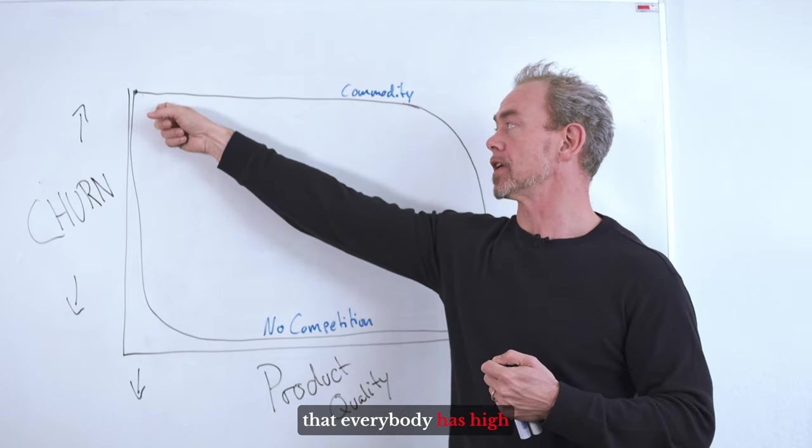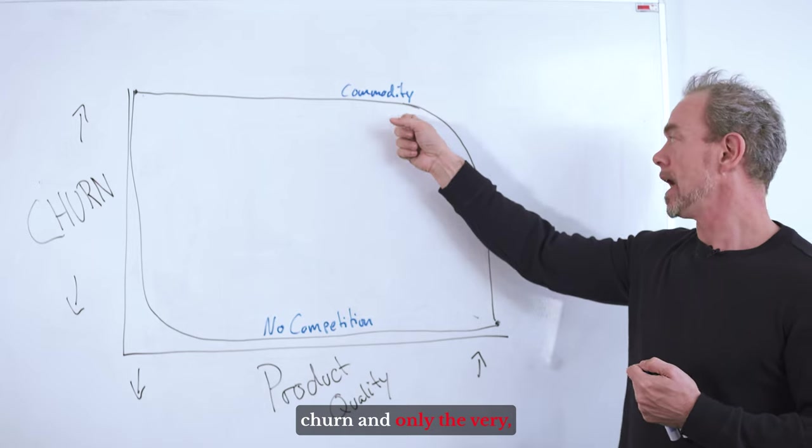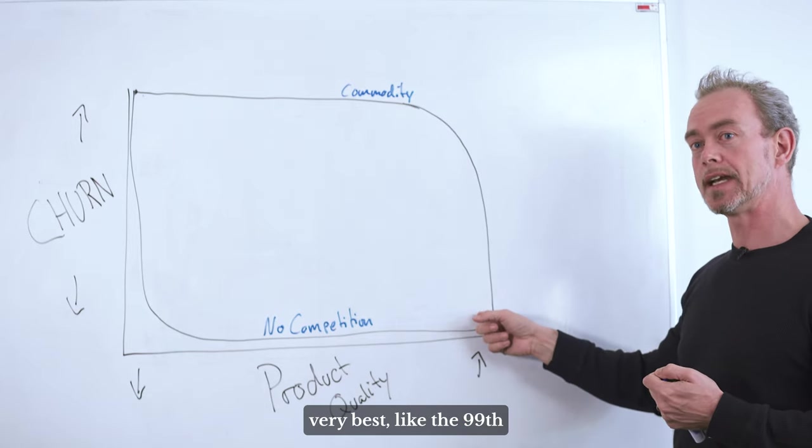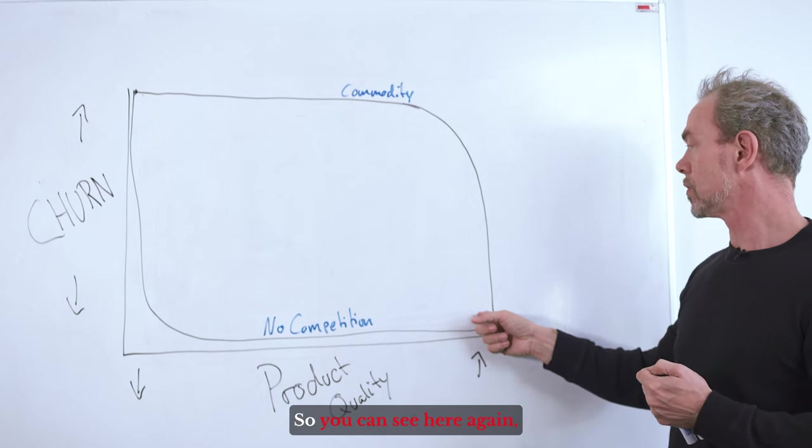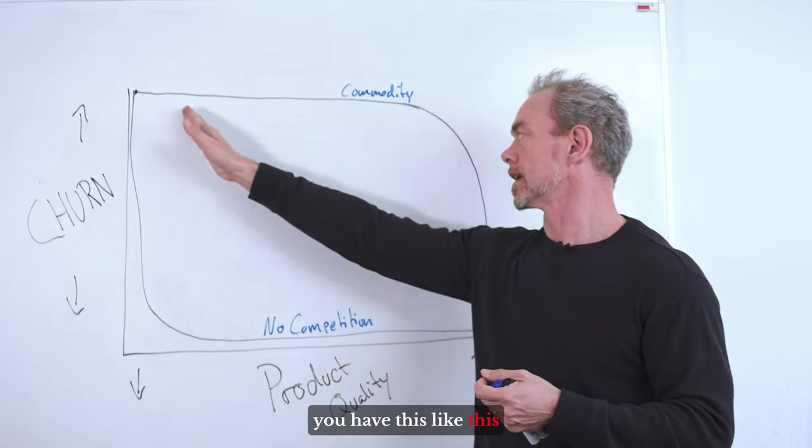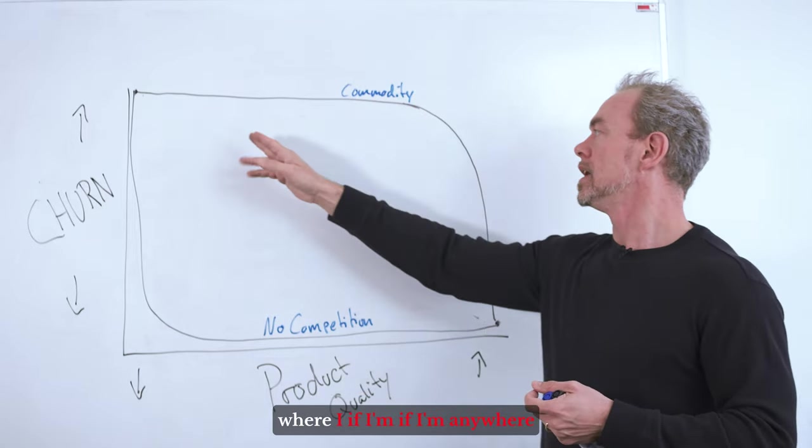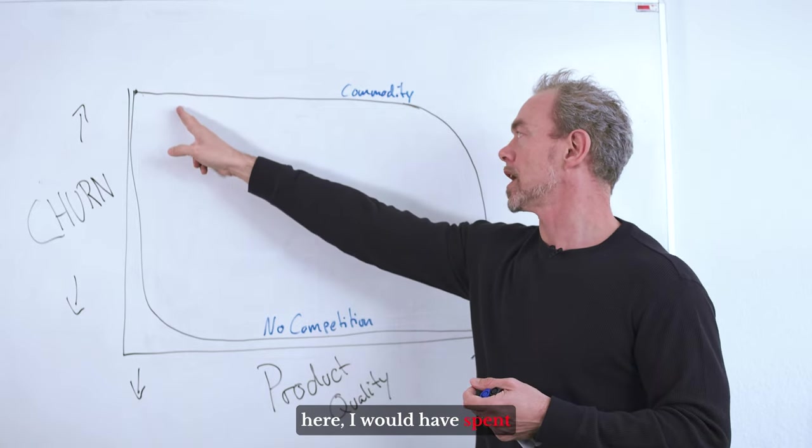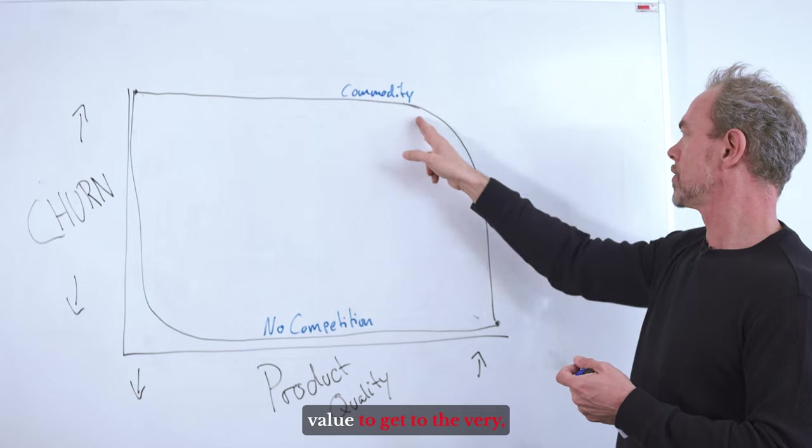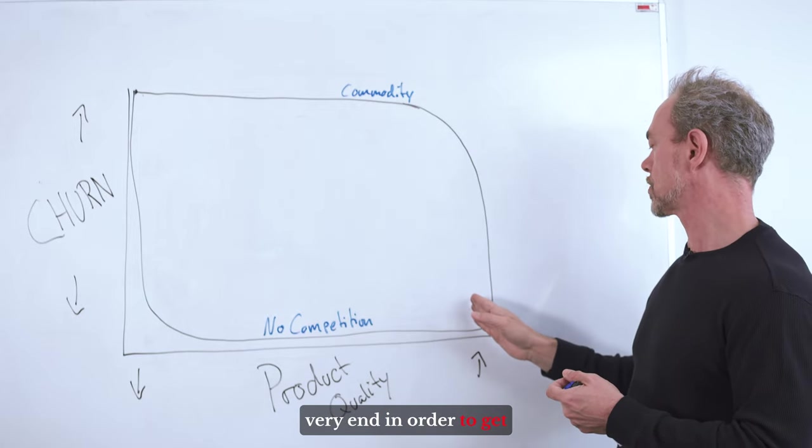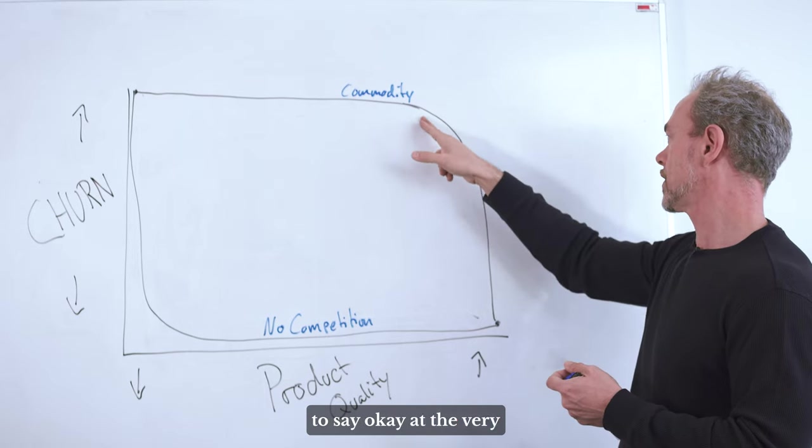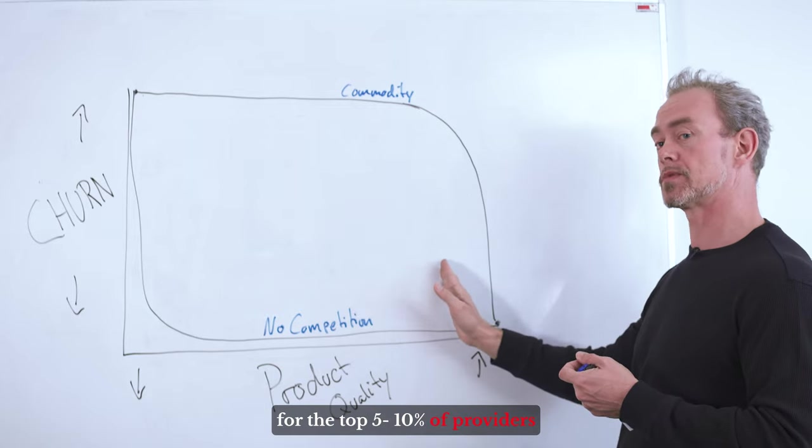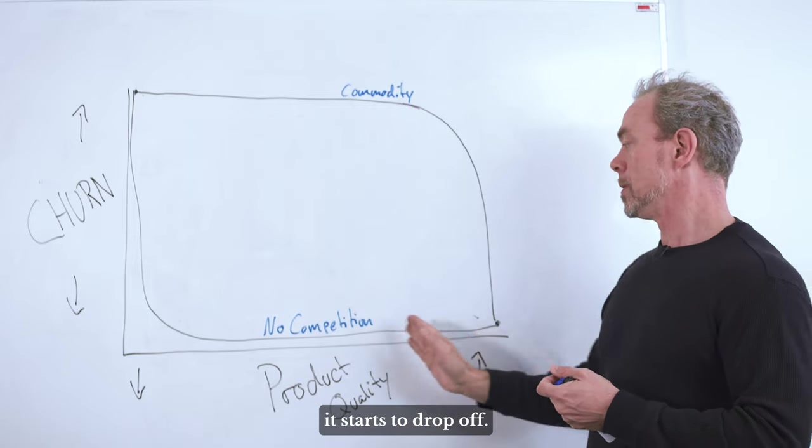So what happens here is that everybody has high churn and only the very best, like the 99th percentile companies will enjoy very low churn. So you can see here, again, you have this desert, the product desert where if I'm anywhere here, I would have to spend a lot of value to get to the very end in order to get even marginal returns on my churn rate. At the very end, it starts to actually drop. For the top five, 10 percent of providers, it starts to drop off. But until then, I get no benefit from investing in product.